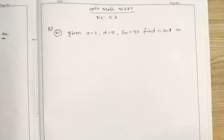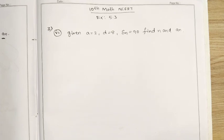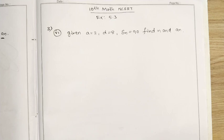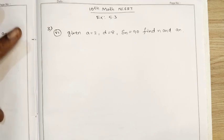Hello students, welcome to the 10th class math subject. This is chapter Arithmetic Progression, Exercise 5.3, third bit question number six. Given a equal to 2, d equal 8, Sn equal 90 — find n and an. Now we will solve this question.